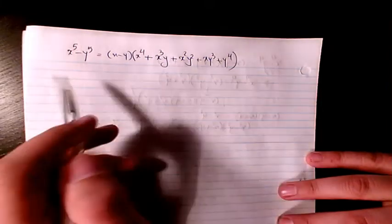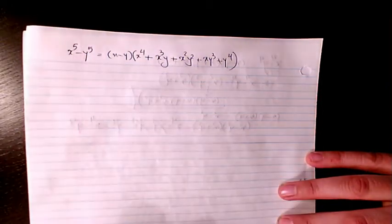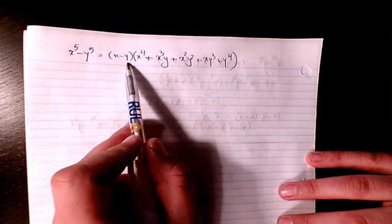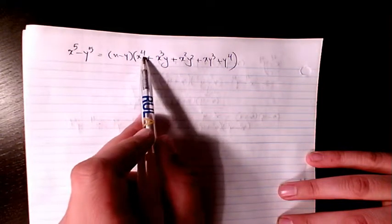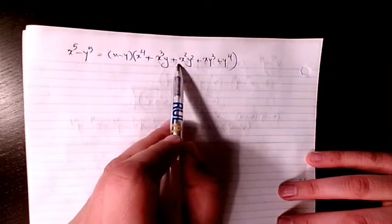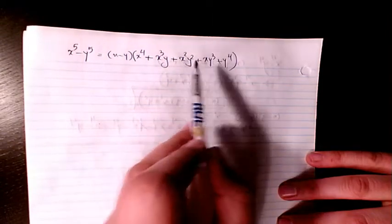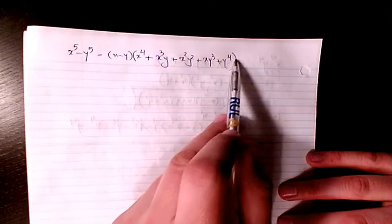In this video, I have x to the power of 5 minus y to the power of 5 equals x minus y times x to the power of 4 plus x cubed y plus x squared y squared plus x y cubed plus y to the power of 4.